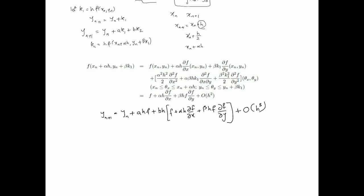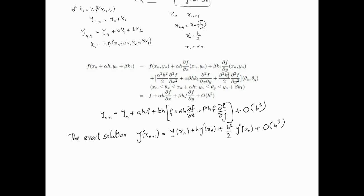The exact Taylor series for y(xn+1) = y(xn + h) gives us the expansion. We won't stop at h-squared this time; we'll go up to the order-h-cubed term, meaning we include the second derivative. Last time we truncated at the order-h-squared term. Now, y'(xn) can be replaced by f(xn, y(xn)) since that's the ODE we're solving. And y''(xn) requires the chain rule for d/dx of f(x, y(x)).